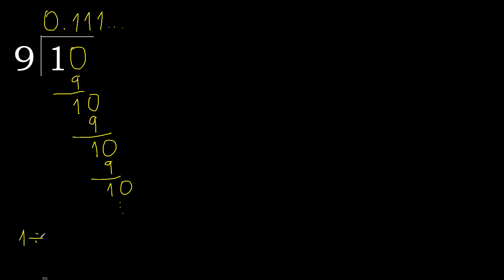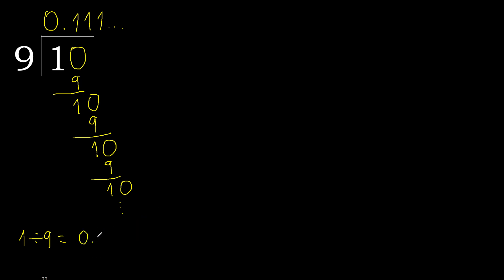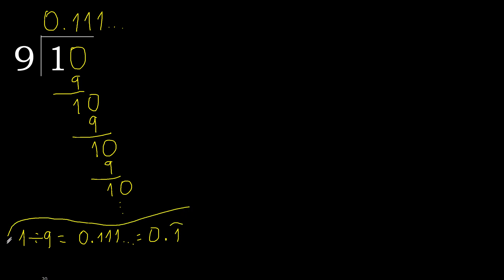1 divided by 9 is repeating. Or after the point: 1 repeating. Therefore, like this — repeat. OK.